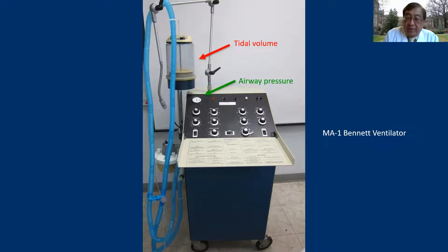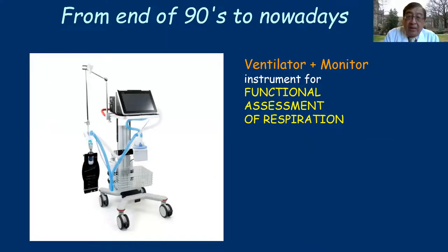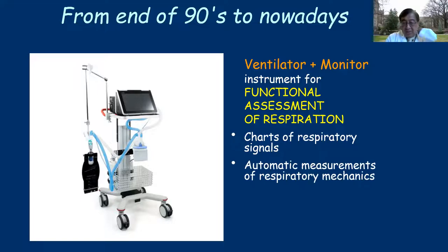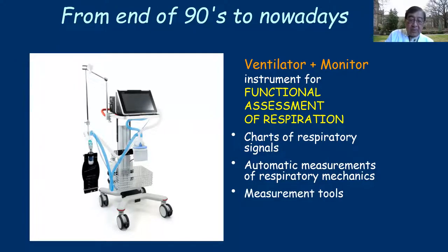By the way, the MA1 is still available on eBay, so it's pretty cheap these days. Nowadays, with modern ventilators, it's basically a ventilator plus monitor. Because of the computer, the ventilator can calculate and monitor many things — pressure, tidal volume, and all those things instantaneously. There are a huge number of different parameters on the modern ventilator, including automatic measurements. What's different from older ventilators is the much better screen interface and increased monitoring capability.